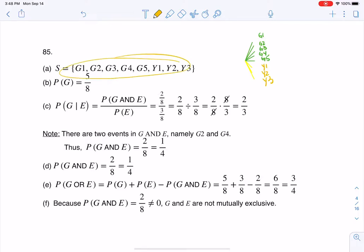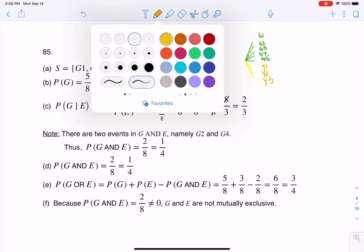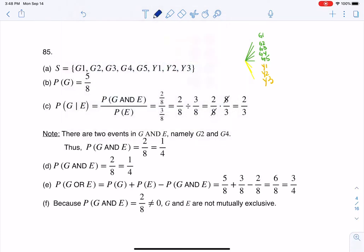There's my sample space, and that's what I wrote right here. There is my sample space, and we can count. I have 8 outcomes in that sample space. So that was the first part.